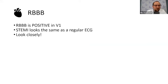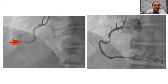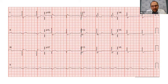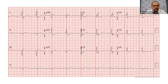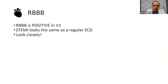The key teaching point: he had a right bundle branch block — a wide QRS complex that's positive in V1. The criteria for STEMI with a right bundle branch block are the same as you would use for any other STEMI. There's no specific Sgarbossa criteria for a right bundle branch block. These EKGs are trickier because the wide QRS throws off depolarization and changes some axes, making things look funky. So whenever you have a right bundle — wide QRS, positive in V1 — just look for STEMI the same way you normally would.